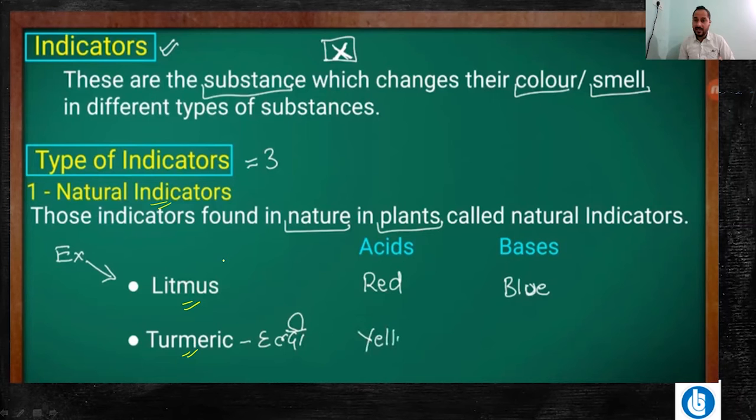Litmus is available in solution form, and it also has blue and red strips. It also has a purple strip, and it also has a solution form.